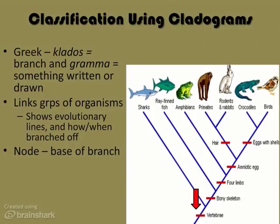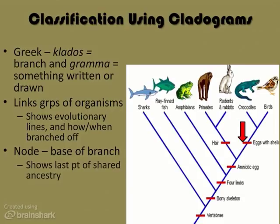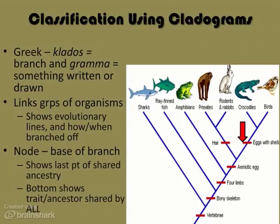The term node is used to refer to the base of a branch. Nodes are important because they show the last point of shared ancestry for the organisms above that node. The trait or ancestor at the very bottom of the cladogram is shared by all organisms in that cladogram. Looking at this cladogram, all of the organisms have vertebrae. But which organisms have just four limbs? Amphibians, primates, rodents and rabbits, crocodiles and birds — because they come after that node on the cladogram. Which organisms have hair? You get the idea of how to read a cladogram.